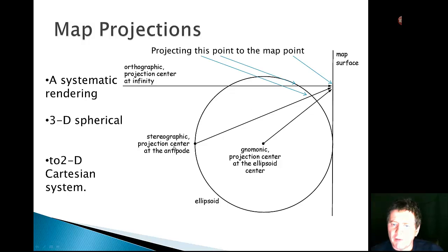If we use a stereographic projection at the antipode, the opposite pole of where we're making contact with the map, this location here would be projected down to the same place on the map. And then if we project from the center of the Earth, this location here. So depending on the projection, this location on the map surface will either be represented by this point, this point, or this point.